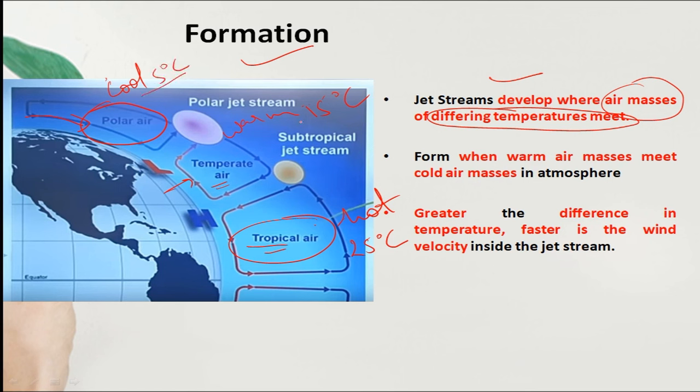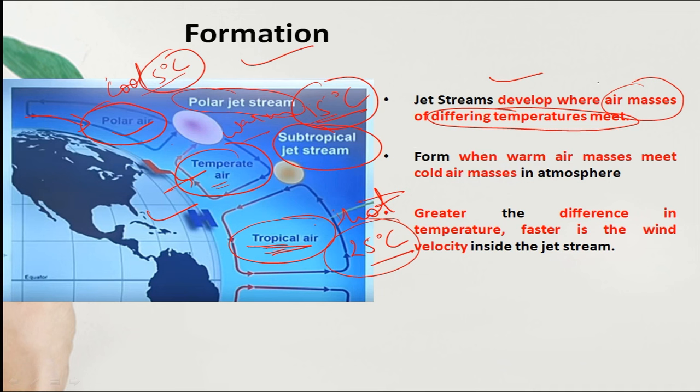When there's a temperature difference between polar air and tropical air, there is a polar jet stream. In the tropical area where tropical air is hot and warm, these temperature differences create a tropical jet stream.